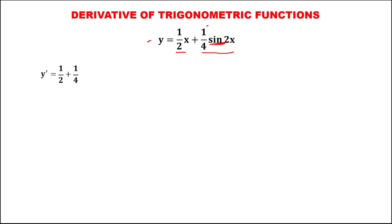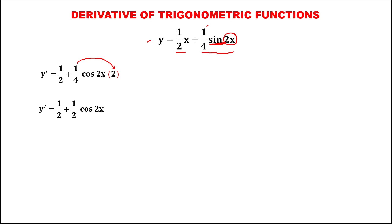Since the derivative of sine is cosine, we have cosine two x, then times the derivative of two x, that's two. Then to simplify, we have one-half, then plus this one-fourth times two — this is two over four — then reduce, so this is equal to one-half times cosine two x.